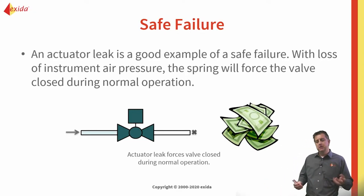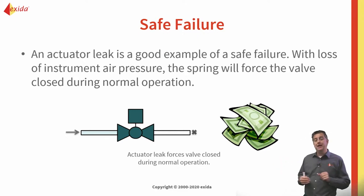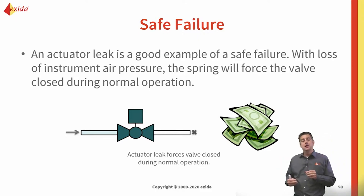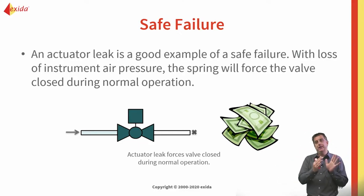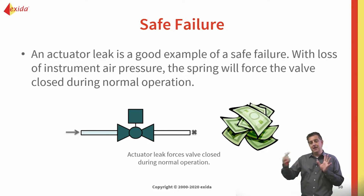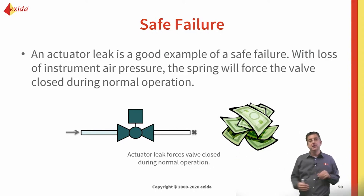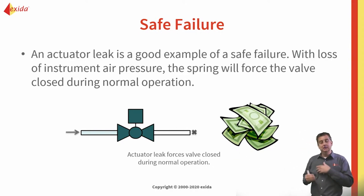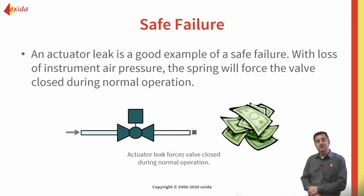A typical example is a spring return actuator where we put pressure to open the valve and compress the spring. If for whatever reason there's a leak in that air chamber and the actuator can no longer hold pressure on the spring, the spring will simply expand and bring the valve to the safe position. That's an example of a safe failure.